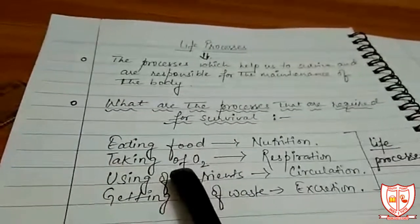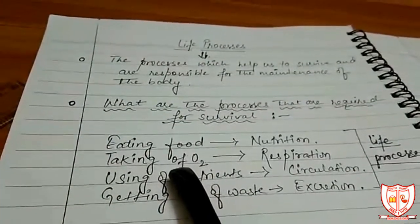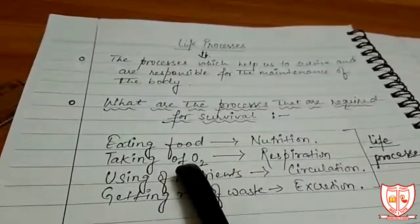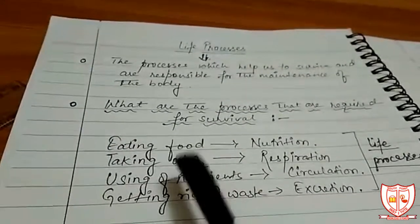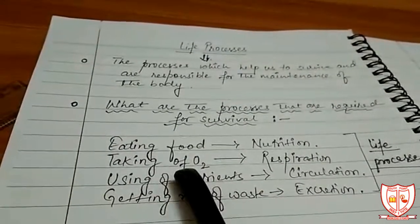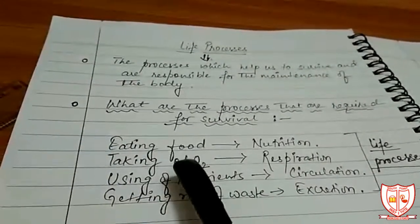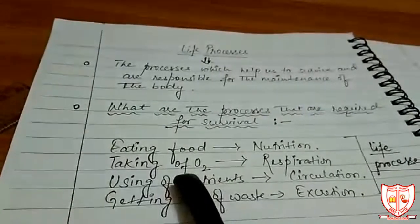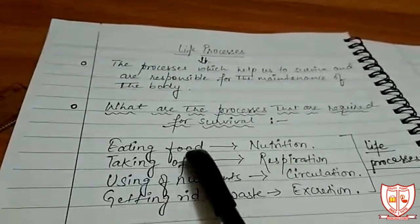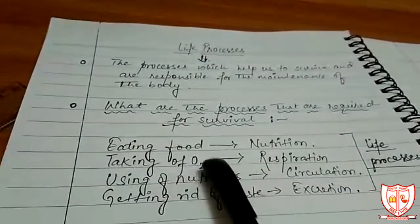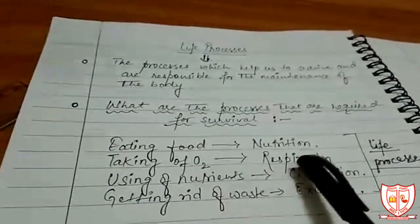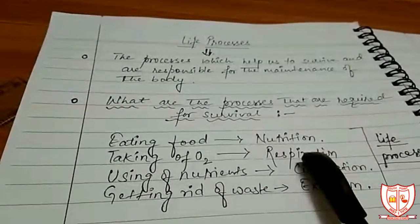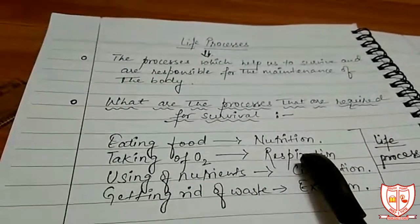Second is taking in oxygen. You have already studied in class 7 how in respiration, oxygen breaks down glucose to give energy. So oxygen is very important for our body, and hence the process of respiration is also very important for survival.